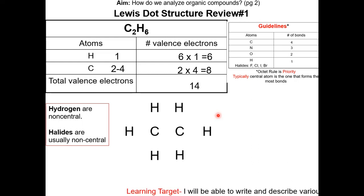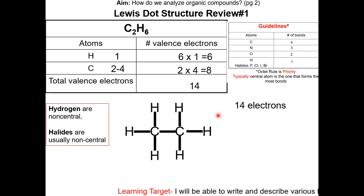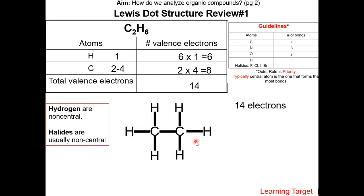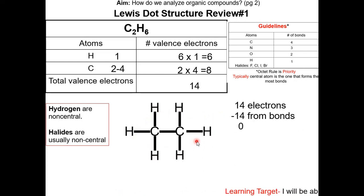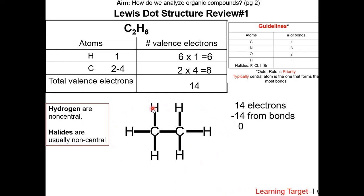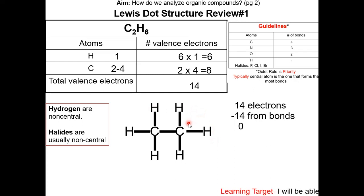Now we're going to connect all the atoms. There are seven bonds, or 14 electrons, used in this step, so there's zero electrons left over. This is the structural formula of C2H6. As you can see, each carbon forms four bonds and each hydrogen forms one.